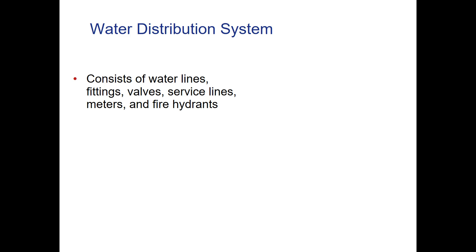A water distribution system consists of water lines, fittings, valves, service lines, meters, and fire hydrants — lots of things that can get in the way and slow the water down. There are basically two different kinds of systems: a loop system and a branch system.